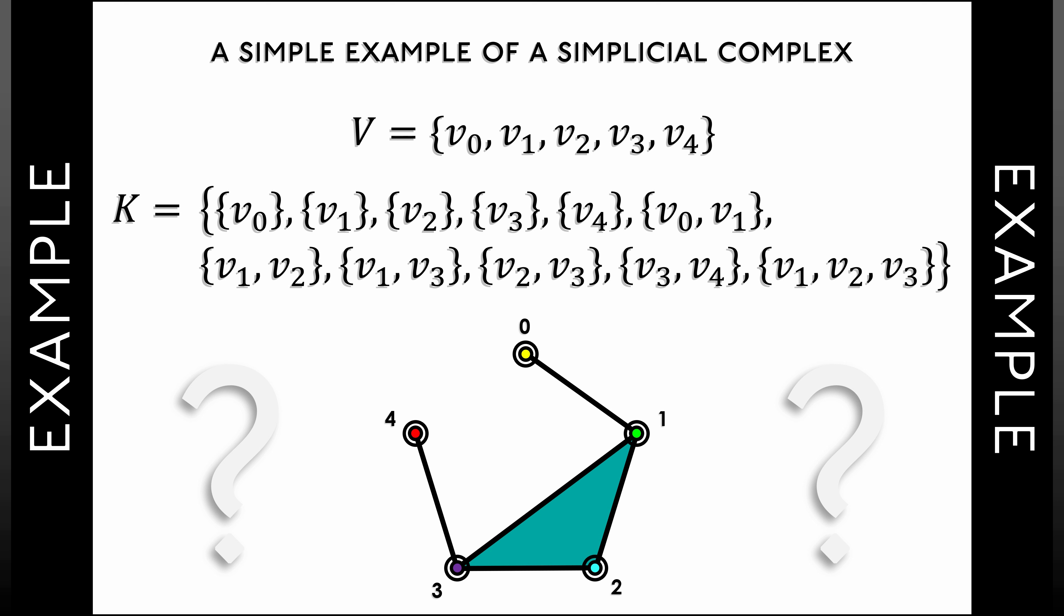We can fill that in to represent the fact that these three vertices are connected together in a two-simplex. This gives us a pictorial representation of this abstract simplicial complex. There is nothing inherently geometric about this. This is simply a tool for us to be able to visualize what this simplicial complex looks like. But more on that later. For now, well, we've been rather sloppy, haven't we? Because we have not verified that this satisfies the conditions for a simplicial complex.